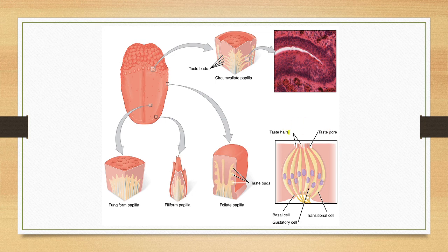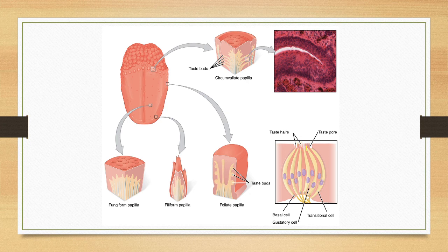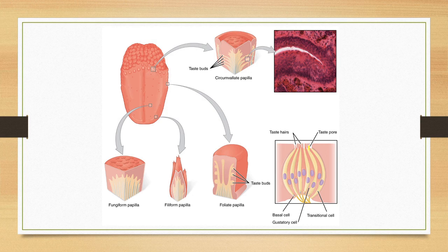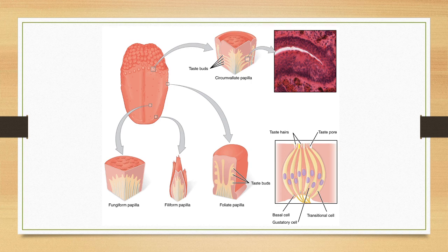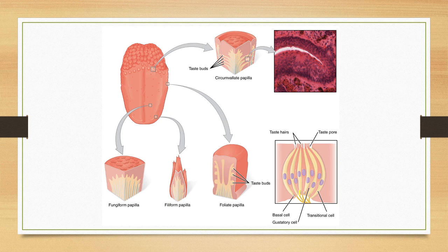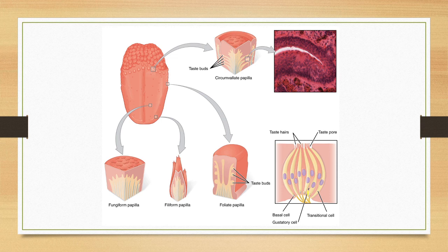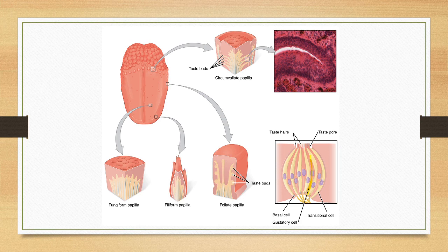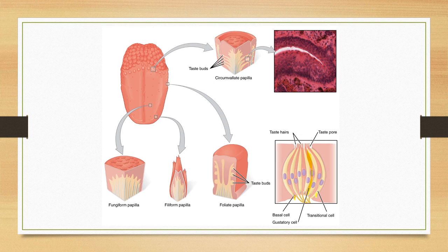This is the enlarged view. There is a taste pore, and taste cells in the middle. Chemicals dissolve at the taste pore. You can see the barrel-shaped structure. There are two types of cells. This is the gustatory cells, the basal cells, and transitional cells. Supporting cells are present in the structure.